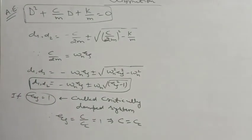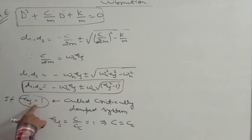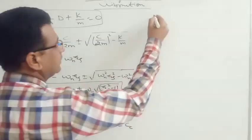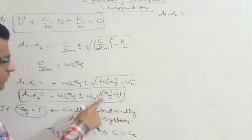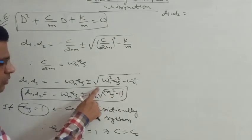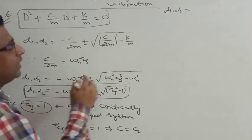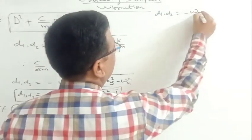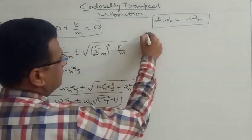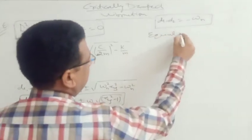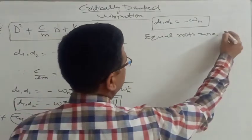For the critically damped system, if zeta equals 1, then the damping coefficient equals the critical damping coefficient. When we substitute zeta equals 1 into the roots equation, the term under the square root becomes zero, so both roots are equal and real — there are equal roots.